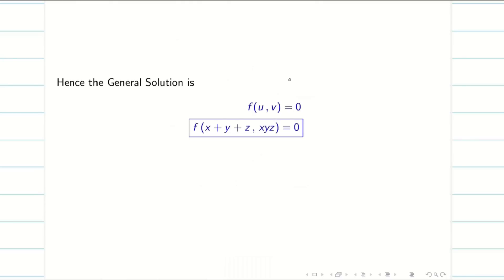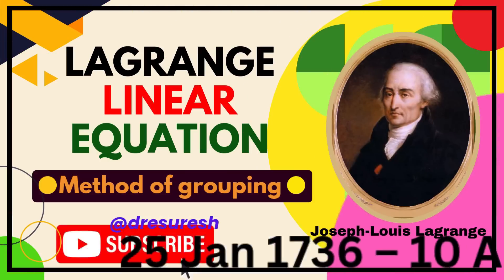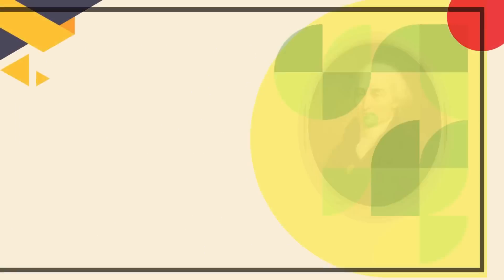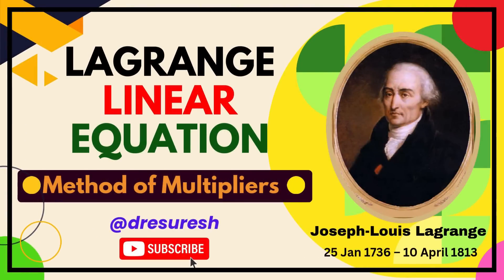Therefore the general solution is f(u, v) = 0. My u is x + y + z, my v is xyz. That is equal to zero. Hope you understand. Thanks for watching. Subscribe to our channel and share with your friends. See you in the next video. Bye bye.